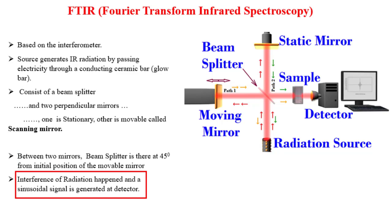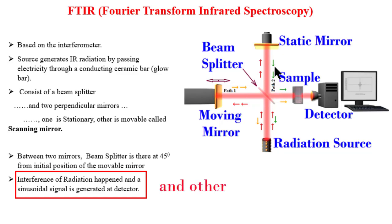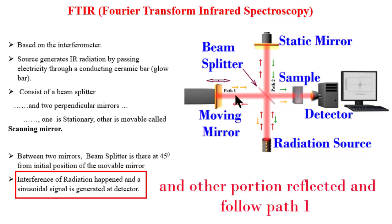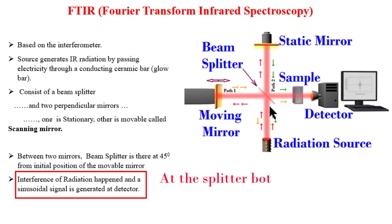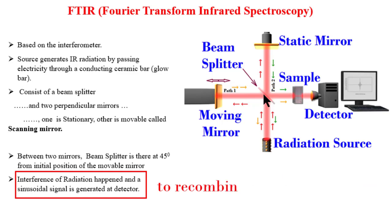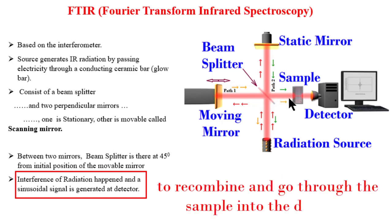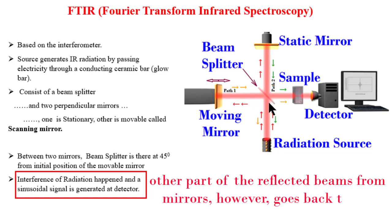Interference of radiation occurs and a sinusoidal signal is generated at the detector. When a monochromatic IR radiation emitted from the source reaches the beam splitter, a portion of the radiation passes through and follows path two, while the other portion is reflected and follows path one. These two beams then reach the mirrors, from where they are reflected back towards the splitter. At the splitter, both beams are split again, causing part of the reflected radiation to recombine and go through the sample into the detector. The other part of the reflected beam goes back towards the radiation source.